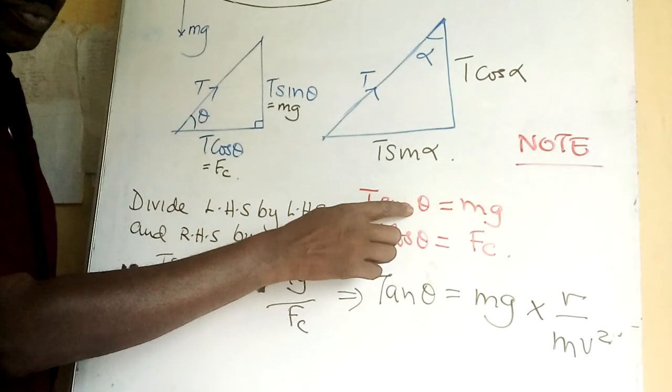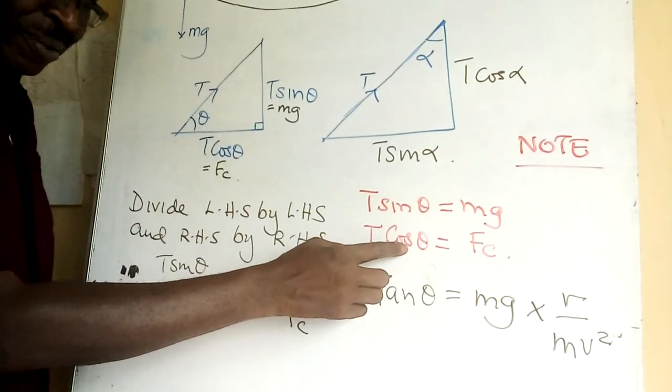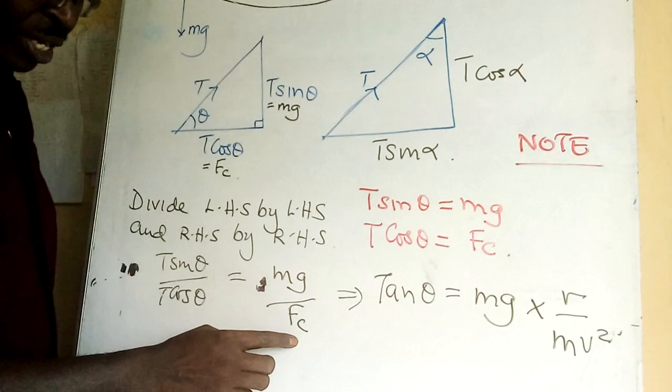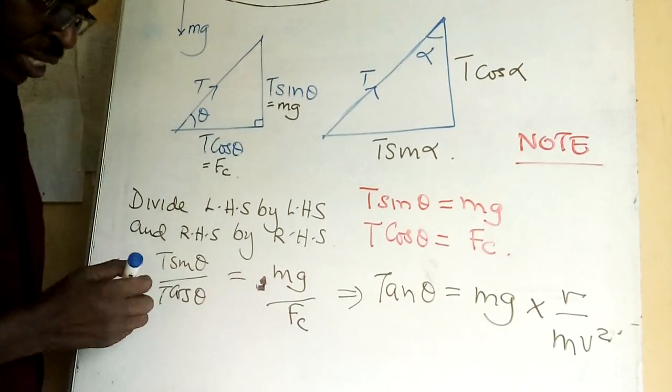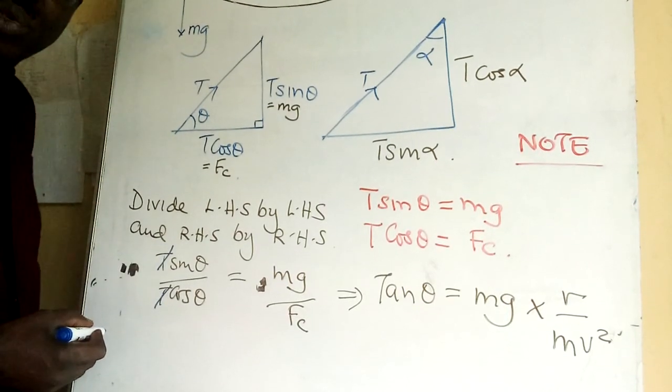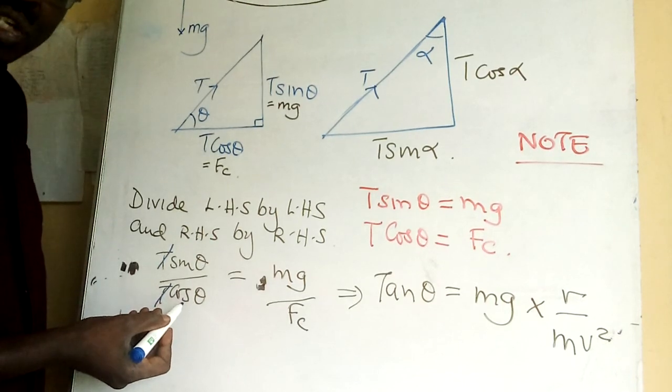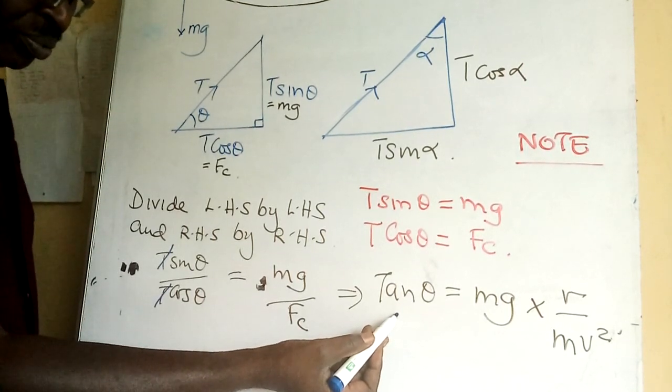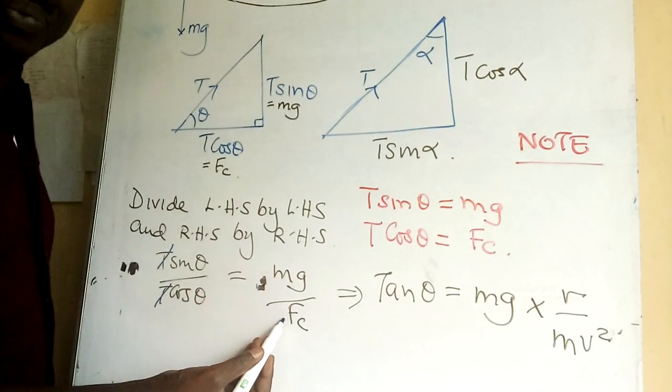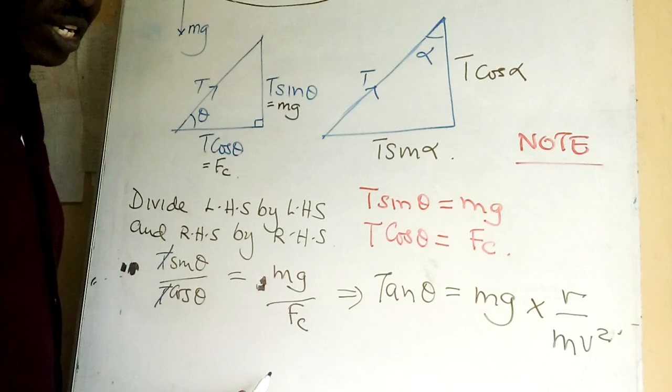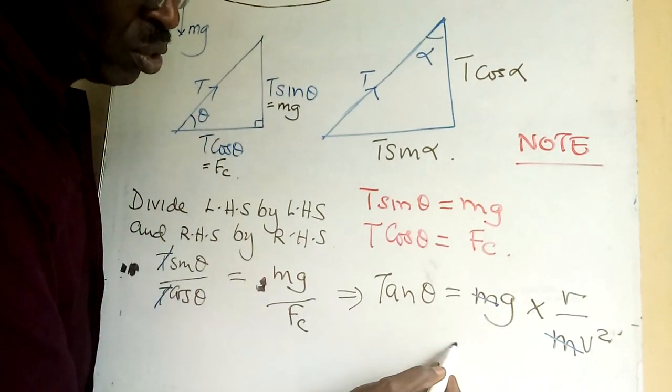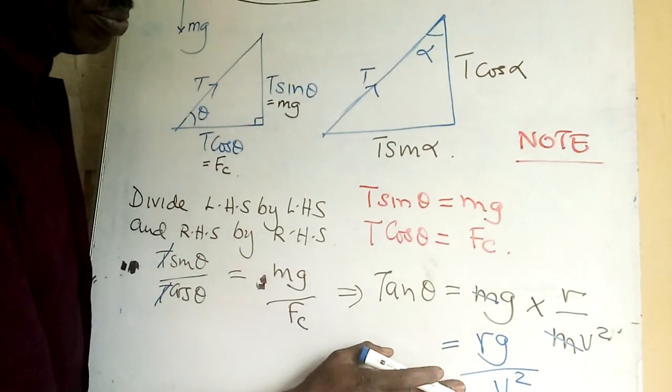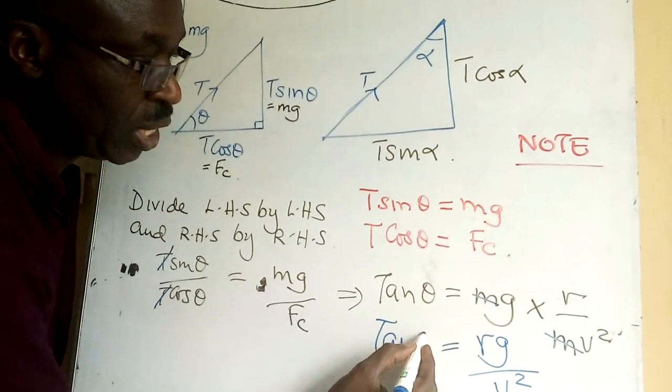T sin theta divided by its corresponding partner T cos theta, here mg divided by Fc. So what do you get? We get T and T cancel, so sine over cos is what we call tangent. Here I have mg divided by Fc, but centripetal force is mv squared over r. So you have again here this and this cancel and you end up with rg over v squared. This is now tan theta.